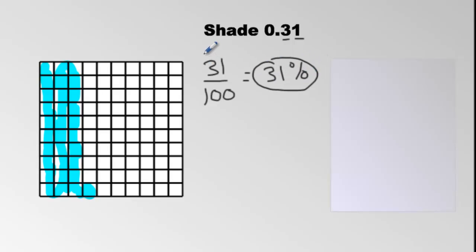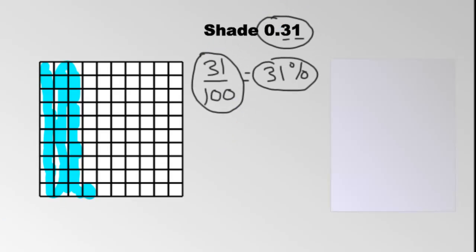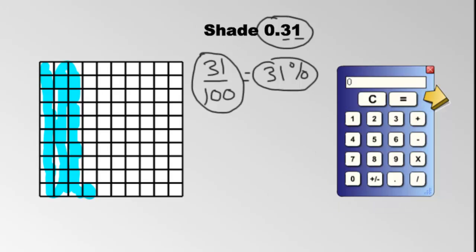This decimal, this fraction, and this percentage are all the same value. Now if we had a calculator, we could simply go 31 divided by 100 and prove that — we get decimal 0.31. You need to understand place values so you're not constantly going back to your calculator.